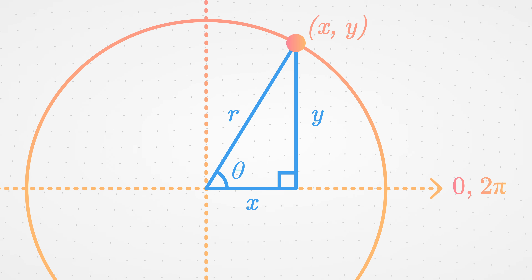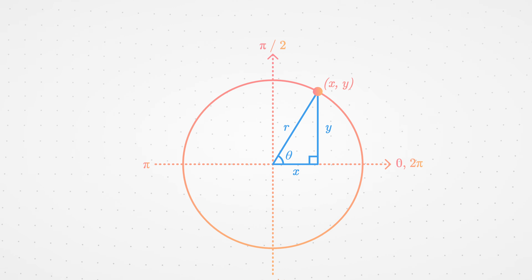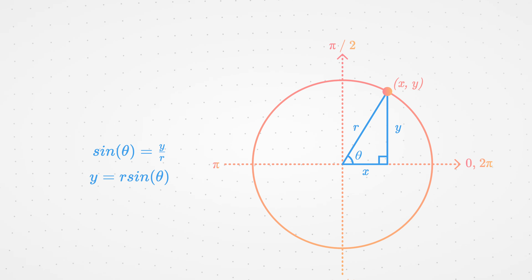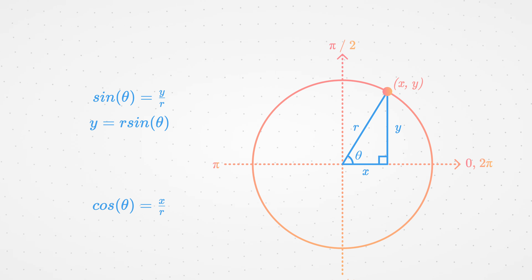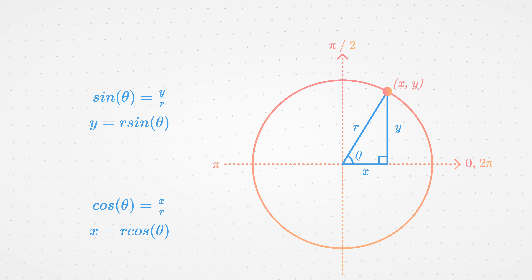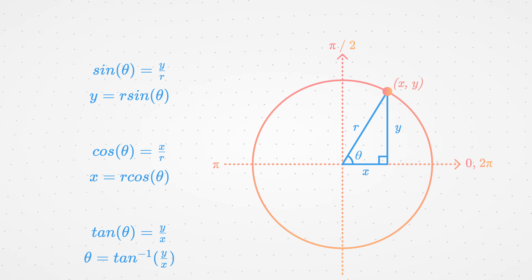Let's go back to the triangle we traced in our circle. We can apply the definition of our trigonometric functions to this triangle, and we get: sine of theta equals y divided by radius, which gives us radius times sine theta equals the y coordinate. Cosine theta equals x divided by radius, giving us x equals radius times cosine theta. And tangent theta equals y divided by x, which gives us theta equal to arctangent of y divided by x. This is what I like to keep in mind when thinking about trigonometry in the context of programming.